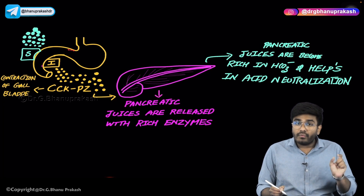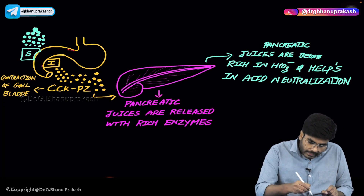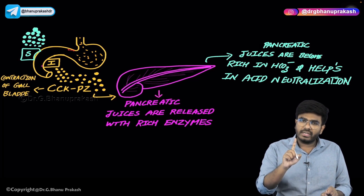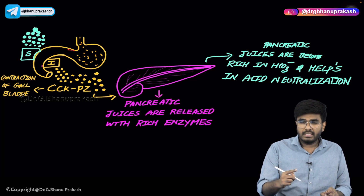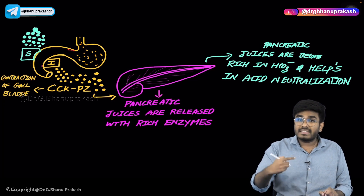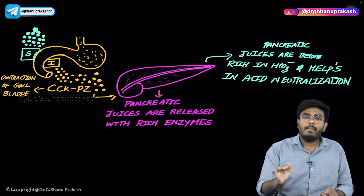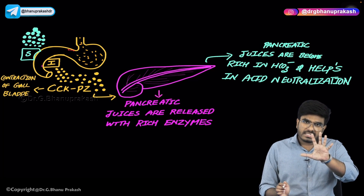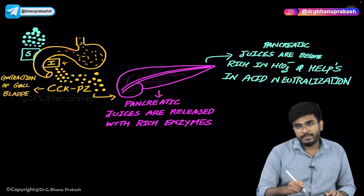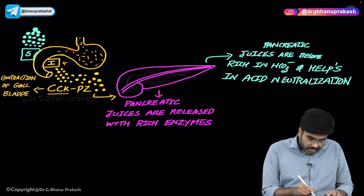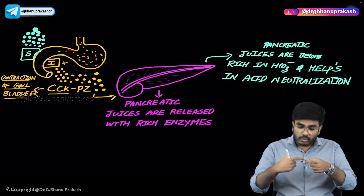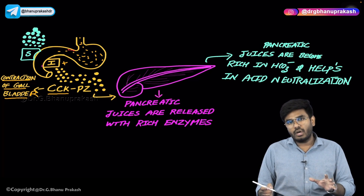What is the stimulus for the I cells — the stimulus for release of cholecystokinin? Whenever you eat fat-rich food, that fat needs to be digested. Bile helps in the emulsification of fats — bile does not have any lipases, but bile helps in the digestion of fats. Whenever fat-rich food reaches the duodenum, fats stimulate the I cells, I cells release cholecystokinin, cholecystokinin causes contraction of the gallbladder, bile is released, mixes with fats, and emulsification occurs, ultimately causing digestion of lipids.